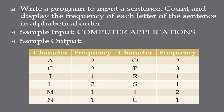First we will discuss how to solve this — the algorithm — and then we will go into the program. First, accept a sentence, find the length, put it inside a loop from 0 to length, and extract the character. After extracting the character you have two methods. The first method uses two loops: the first loop is the character loop, then in the second loop you take characters one by one, compare from A to Z, and display.